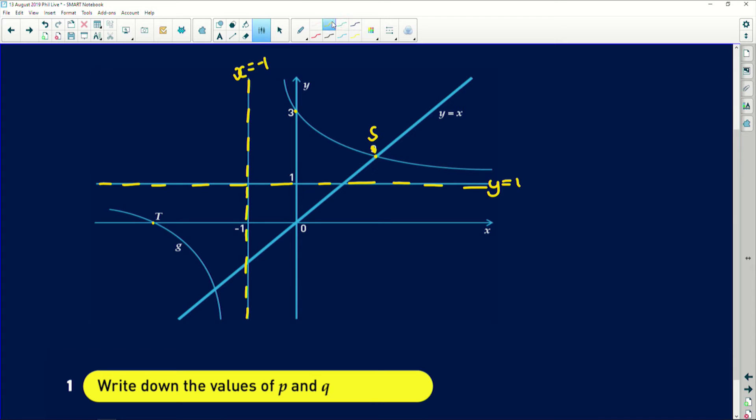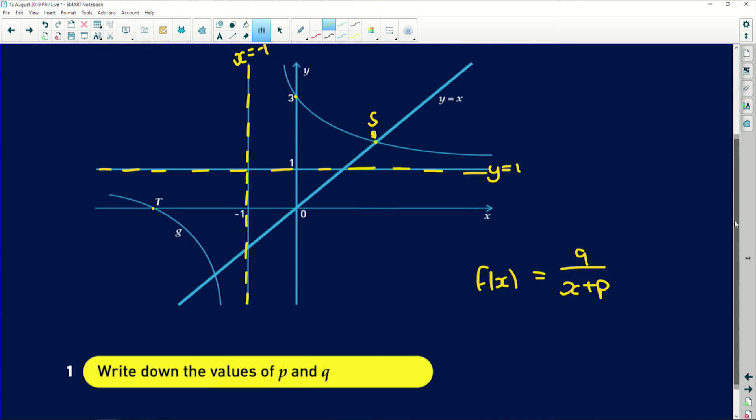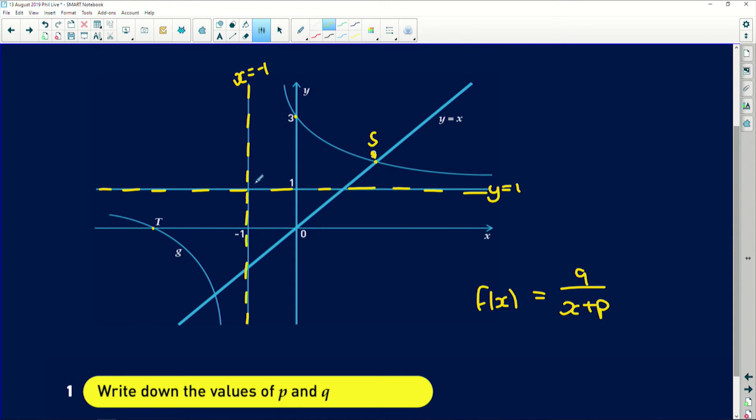So at x equals negative 1 is an asymptote, which means that p is equal to 1. Because if I had f of x equals a over x plus p, and let's say here we have the graph that x cannot equal negative 1, so if I had negative 1 in the denominator to make that undefined, p would have to be the same value.